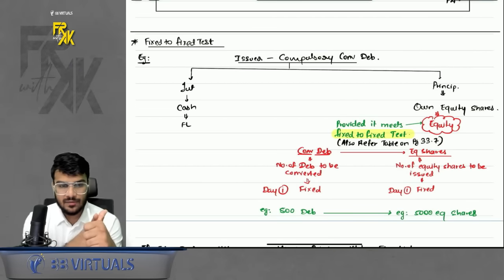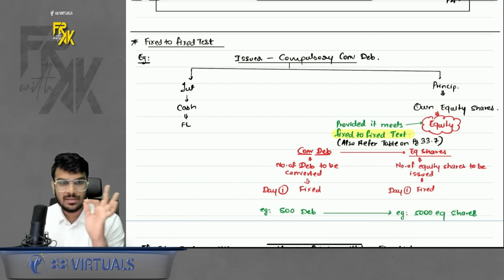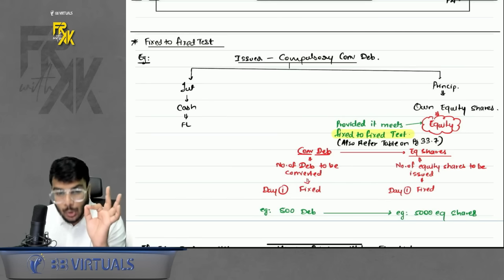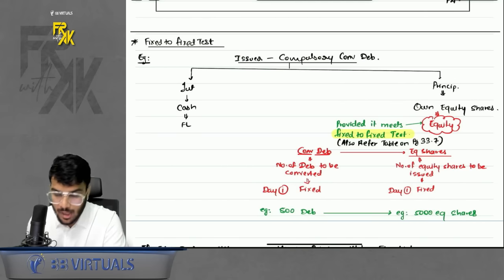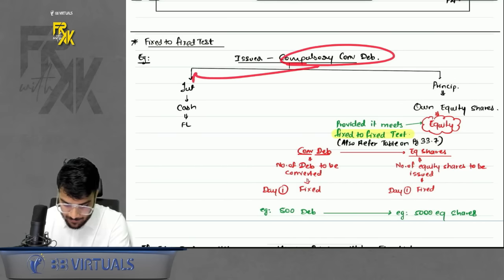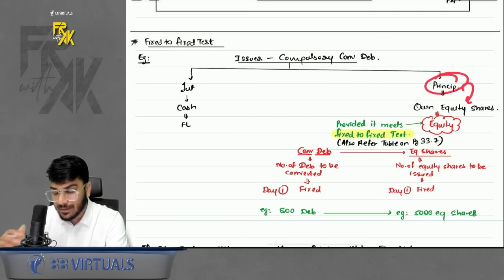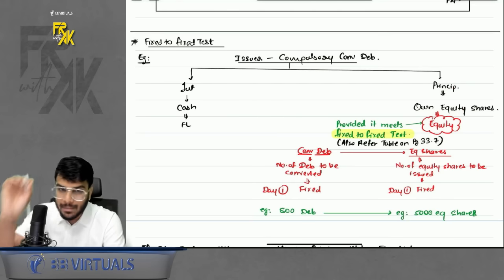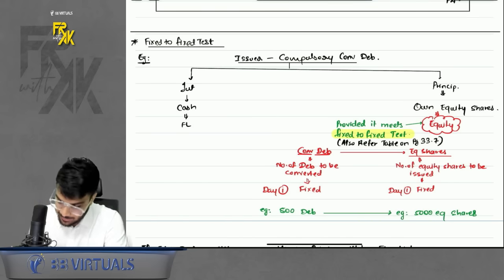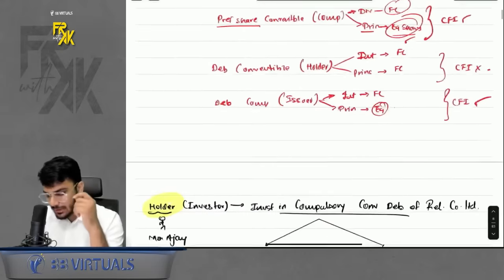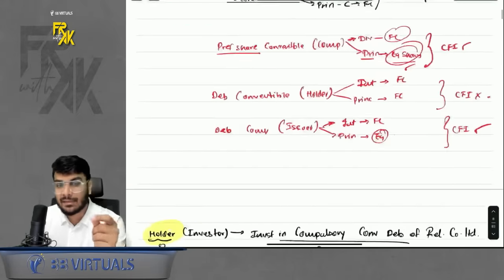We have covered definitions and the compound financial instrument. The next point under IND AS 32 is the fixed-to-fixed test. This is a simple test conducted to know whether an item qualifies as equity. For example, in a compulsory convertible debenture, the principal is given in own equity shares, so the principal is equity — but only if it meets the fixed-to-fixed test.